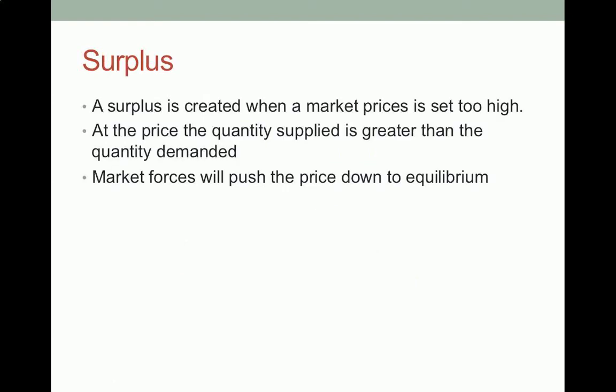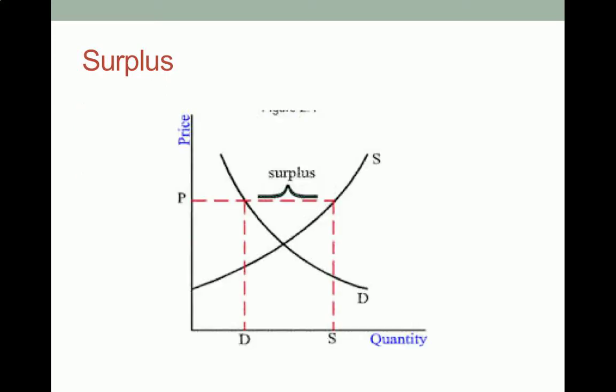Surpluses, on the other hand, are created when a market price is set too high. So at that price, the quantity supplied is greater than the quantity demanded, and eventually what's going to happen are market forces are going to push down to the equilibrium price.